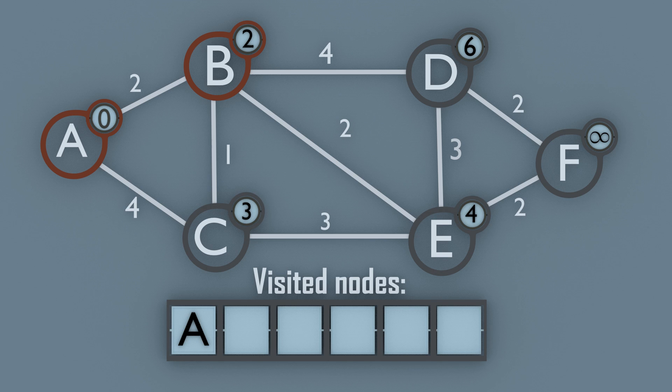We mark node B as a visited node and move to node C. From node C we compare the distance only to node E since nodes A and B have already been visited. Since the distance to node E is greater than the weight of the node, we mark node C as visited and move on to node E.